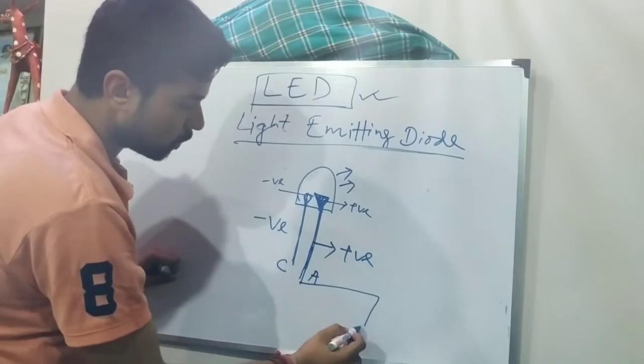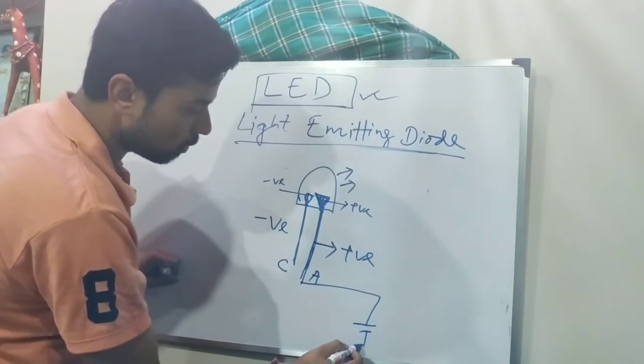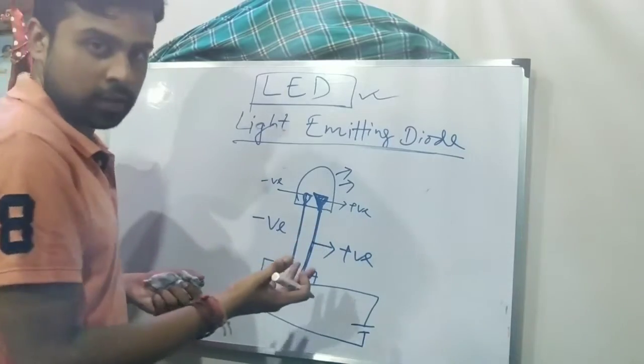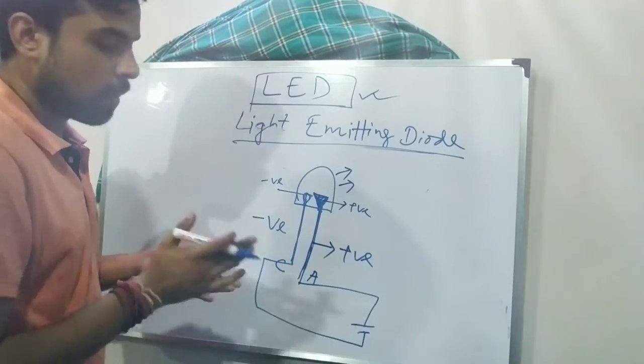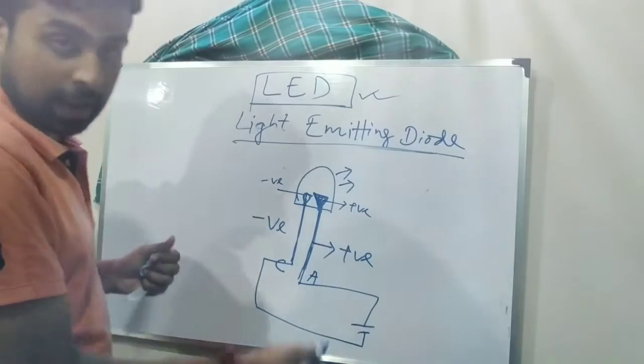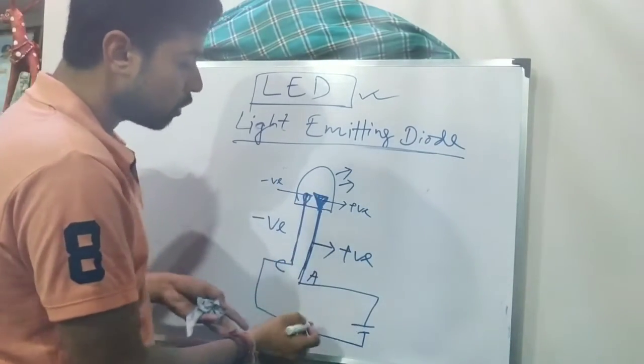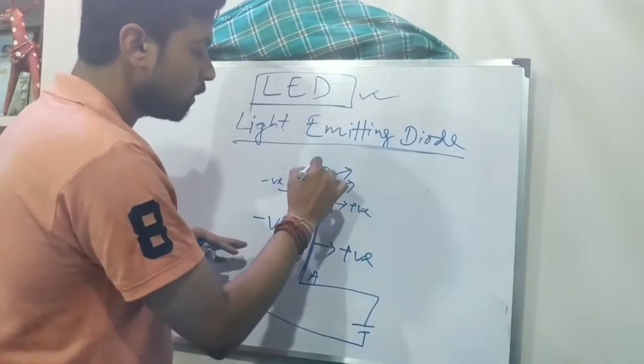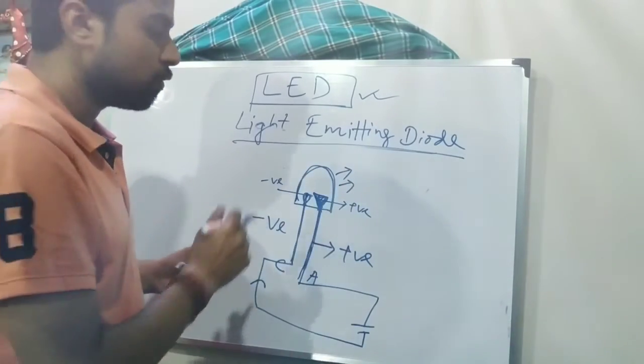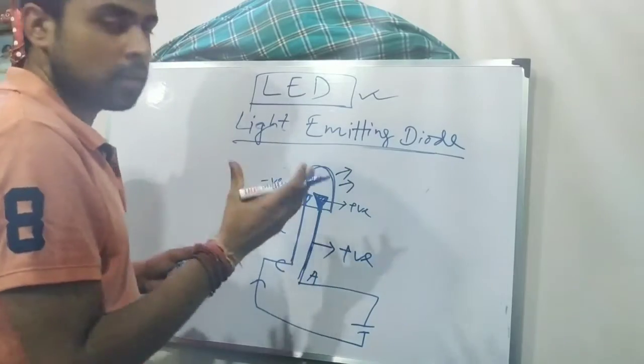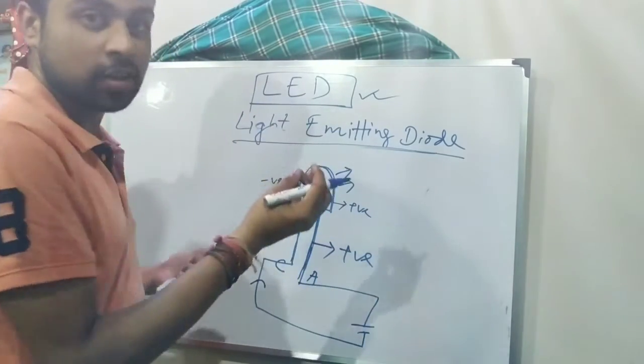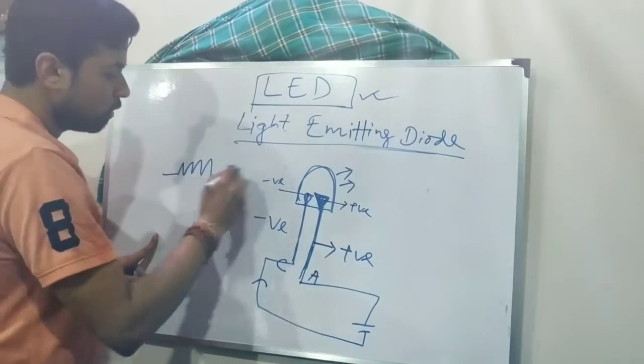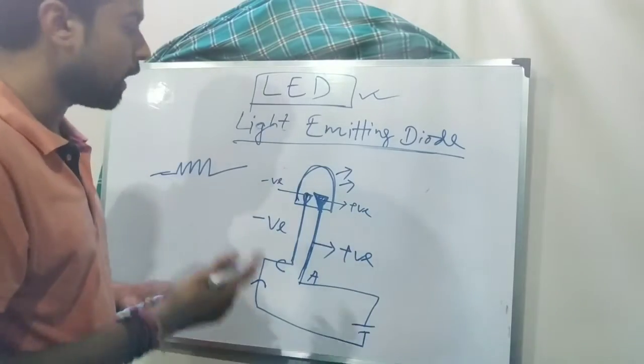So when we give a supply, let's say positive terminal is connected with the positive terminal of the battery and the negative one is with the negative terminal. So if we do so, will it work? What's the answer? Just think it once. Yeah, it can work but it depends how much voltage you are applying. If the voltage is more than the sustainability of this particular LED, then this will blow off. So for that purpose, we must use certain or such an element which can resist the electricity.